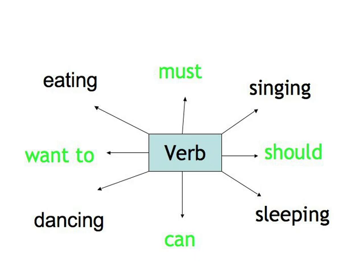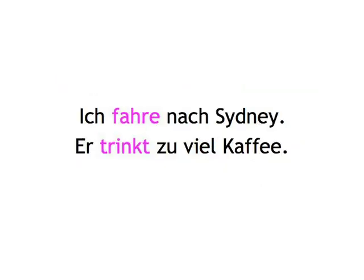As you know by now, a verb is a word that indicates an action, like singing, dancing, eating, or an attitude to an action, like 'can' or 'must.' You also probably know that the verb is the second idea or element in a main clause in German: 'Ich fahre nach Sydney,' 'Er trinkt zu viel Kaffee.' In English, if you start a sentence with the subject, then the verb is often the second element too.